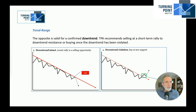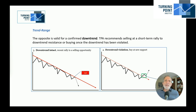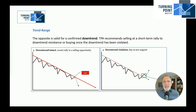If a stock has rallied back to downtrend resistance, then it would be a sale. If the stock has broken through and had a breakout above the downtrend, in that case we'd want to look for a place to buy this stock.